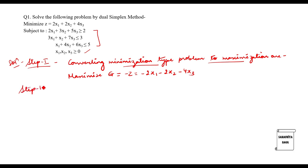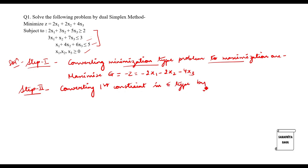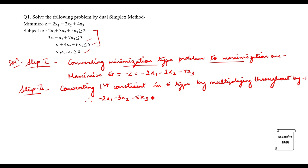Step 2: we need to observe that for a maximization type of problem, the constraints should be of the less-than-or-equal-to type. The second and third constraints are already less-than-or-equal-to. The first one is greater-than-or-equal-to, so I will have to convert it into less-than-or-equal-to by multiplying by minus 1. Therefore the first equation becomes: minus 2x1 minus 3x2 minus 5x3 ≤ minus 2.